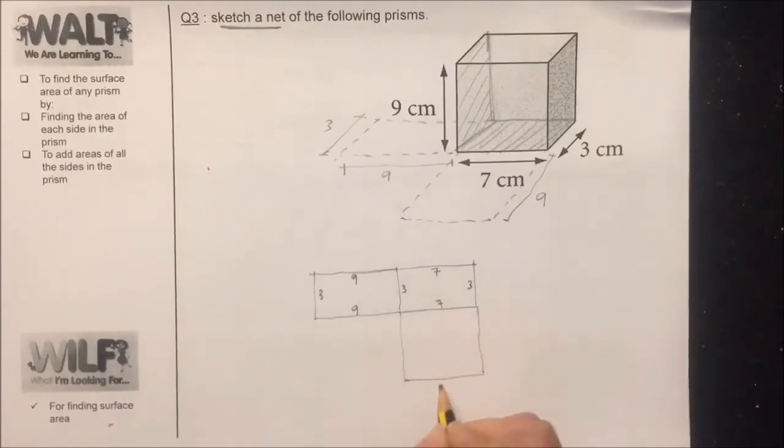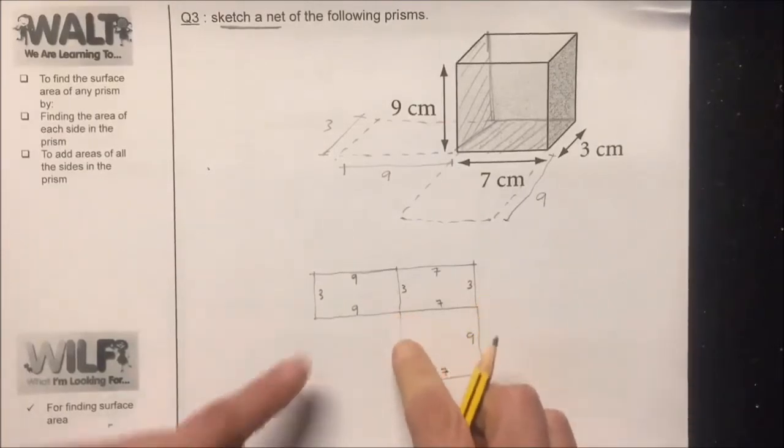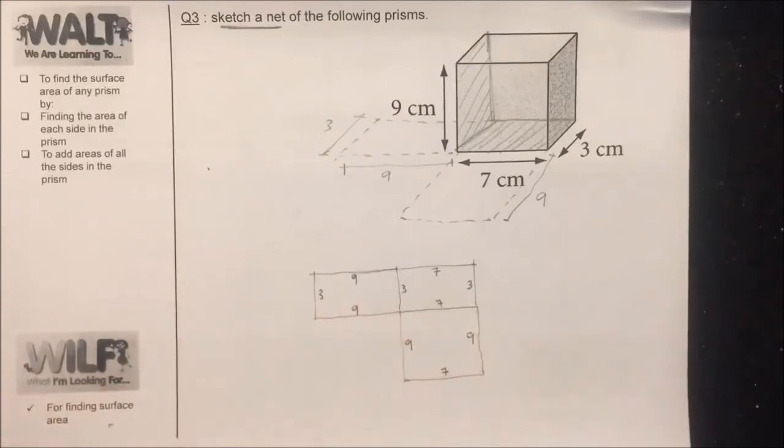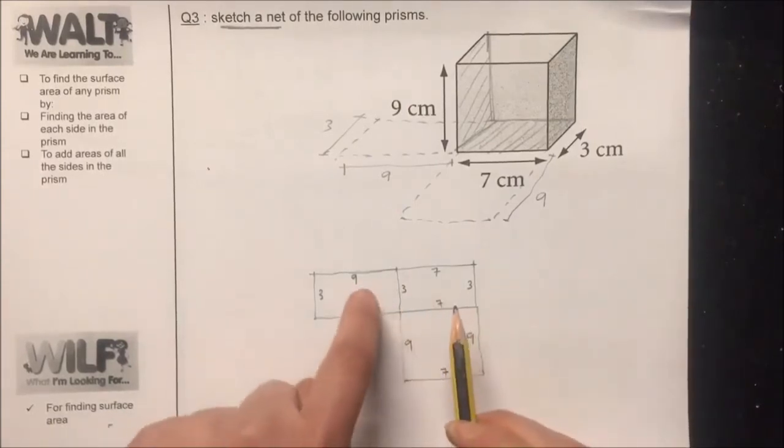So this is 7, this is 7, this is 9, this is 9. So when these two sides stand up, they're gonna meet together, so it makes sense, right? Perfect. So one, two, three faces.